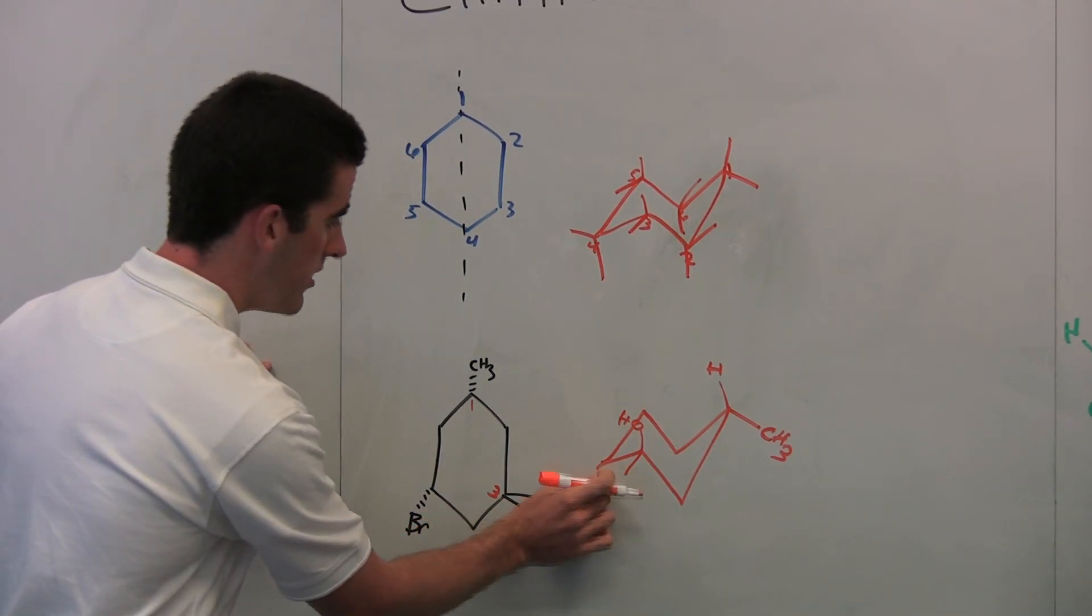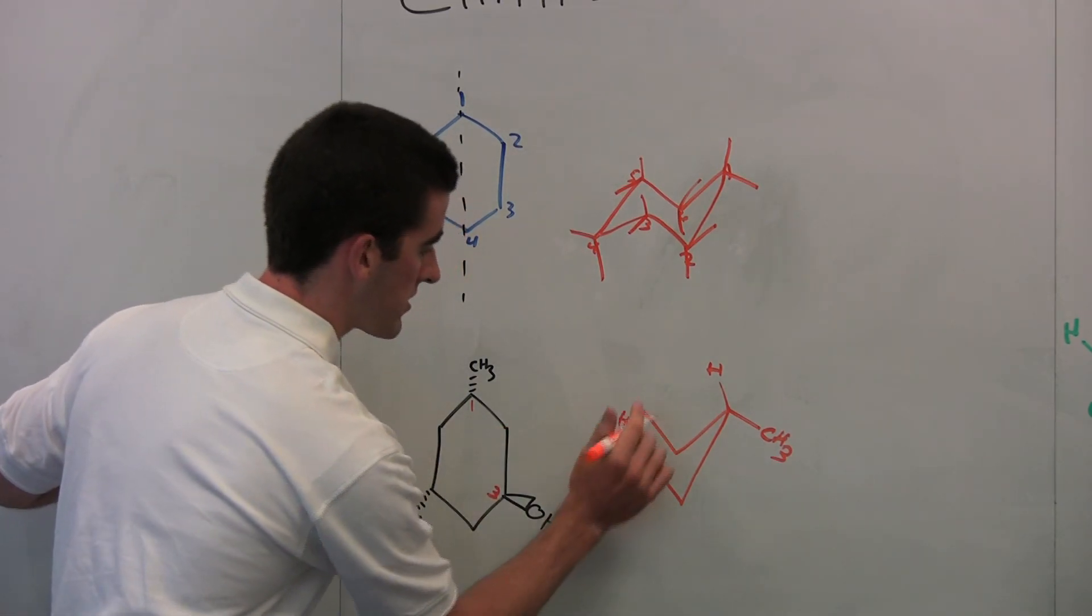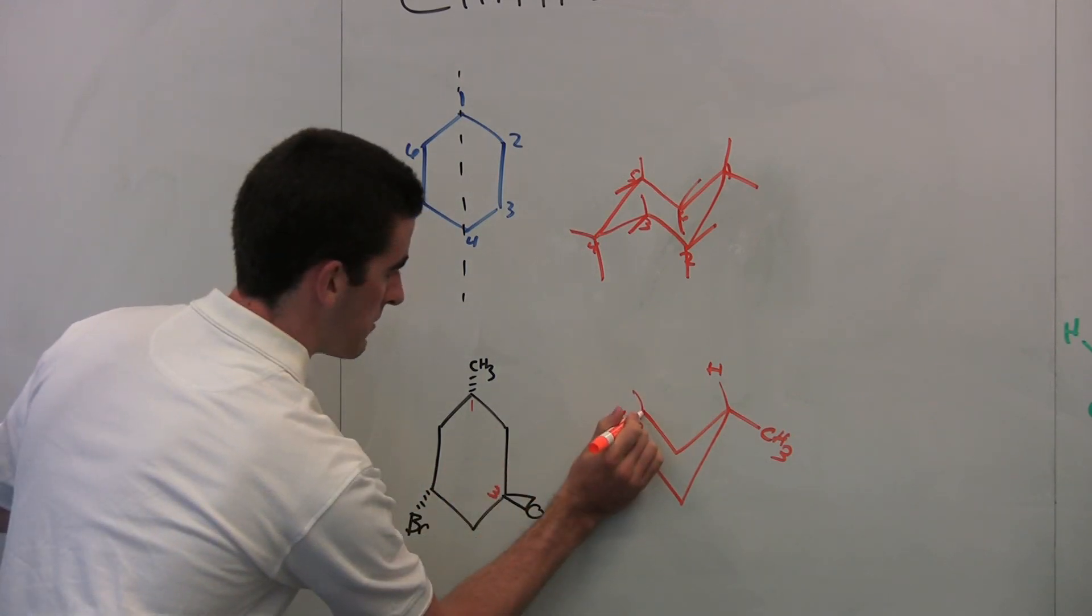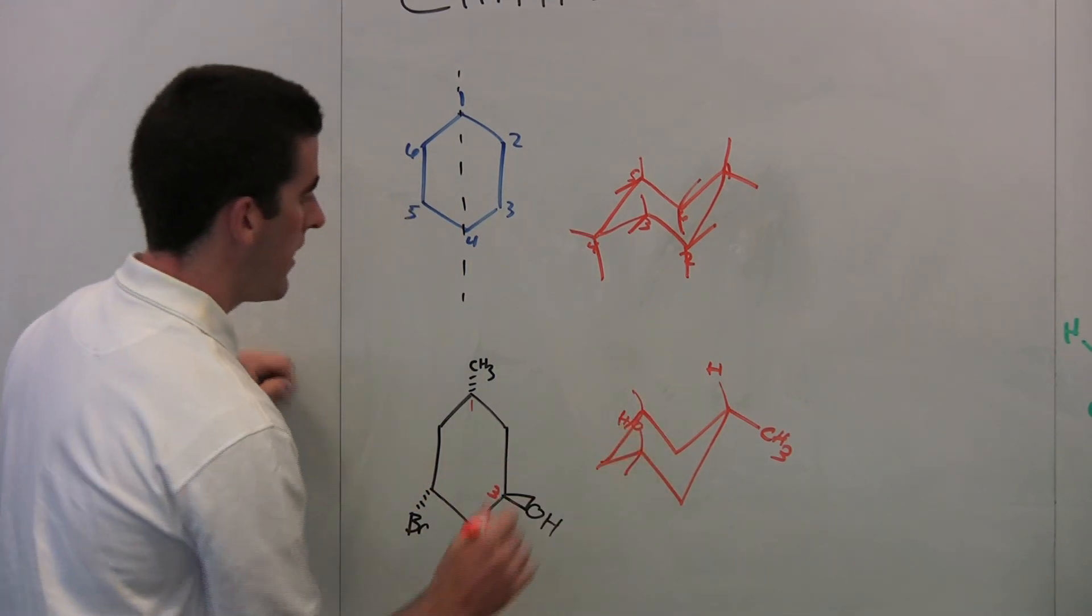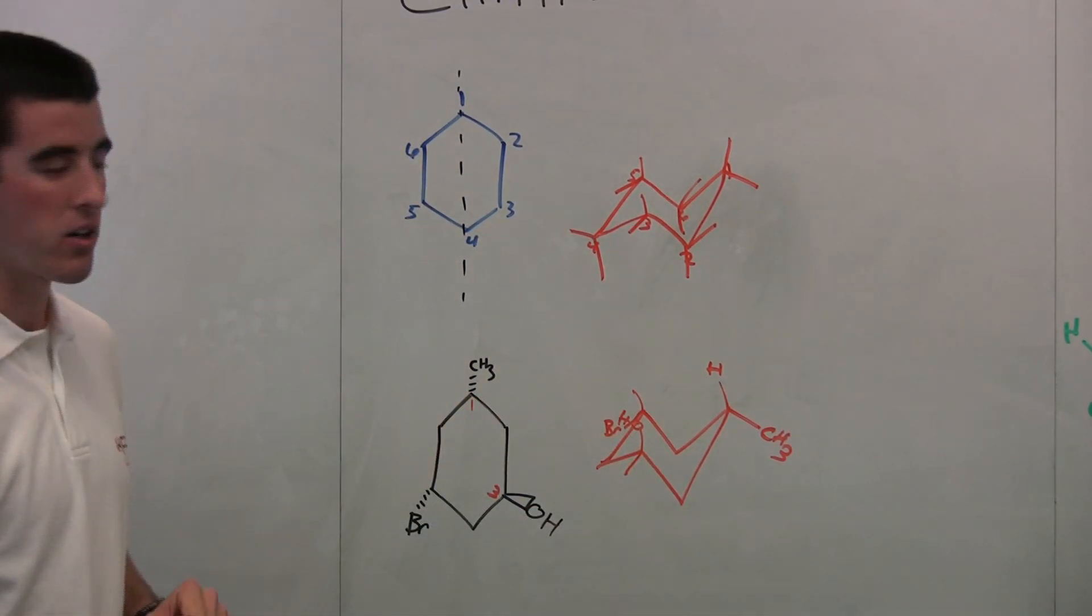Position four, we have nothing there. So we're going to go to position five there. Same orientation. Since it's above here, it's going to get that axial. And then since it's on the side of the foot, the equatorial is going to be pushing towards the foot. And it's kind of hard to see here, but the BR, since it's dashed, it's going to be below the plane.